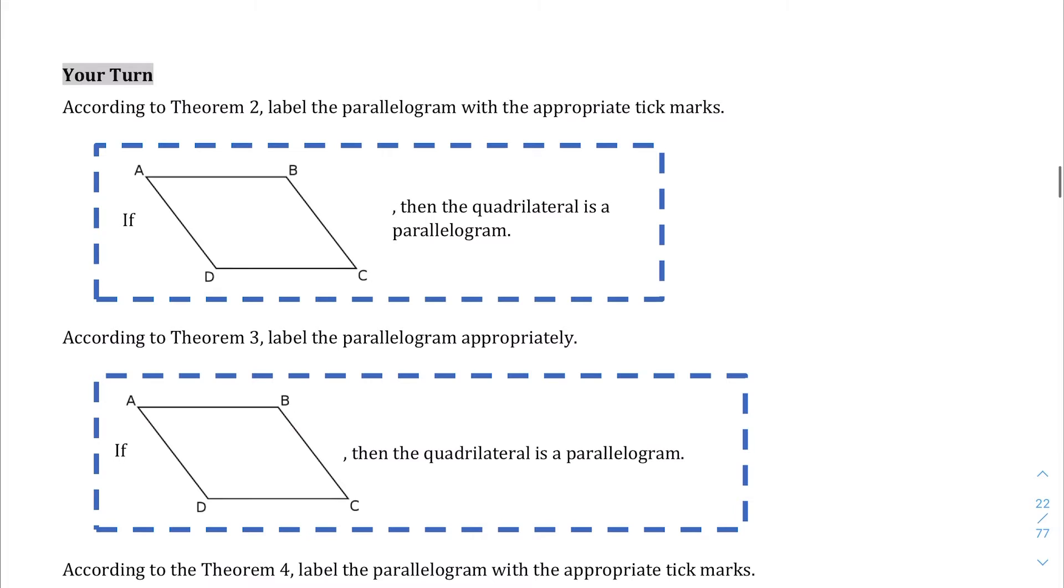Let's go ahead and jump into the your-turn section, and if you want to refer back to the pages where it starts with theorem 1, you can go ahead and do that. But if you remember, this says that if you have a side length that is both congruent and parallel, if it's congruent and parallel, we don't normally draw it at the same time, but if you're parallel at least one, then you have a parallelogram.